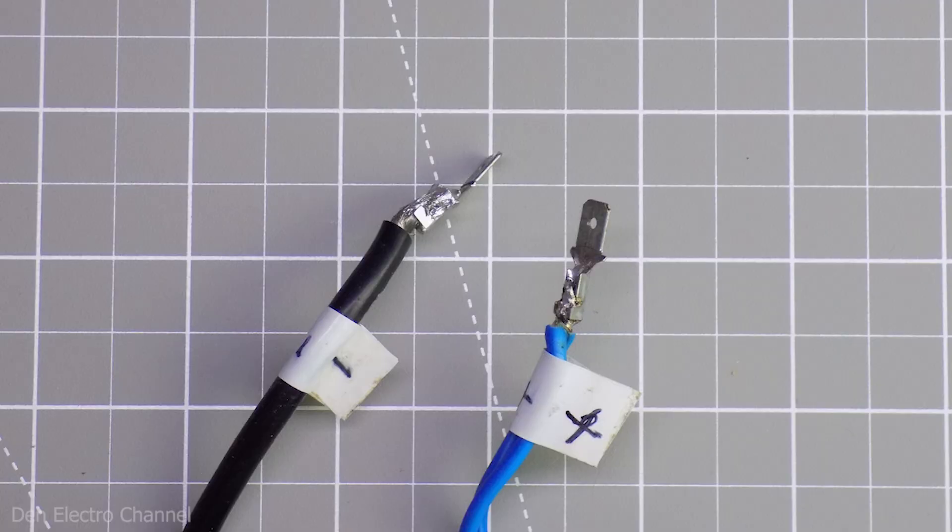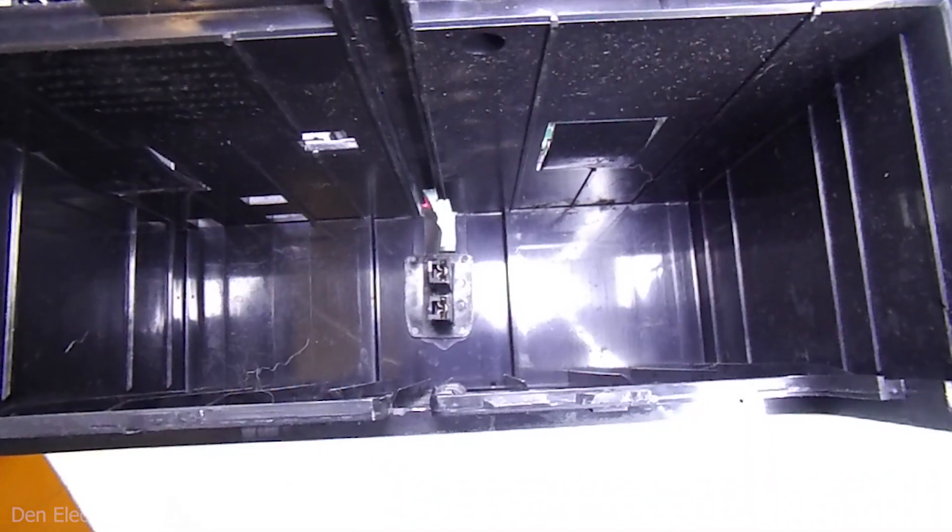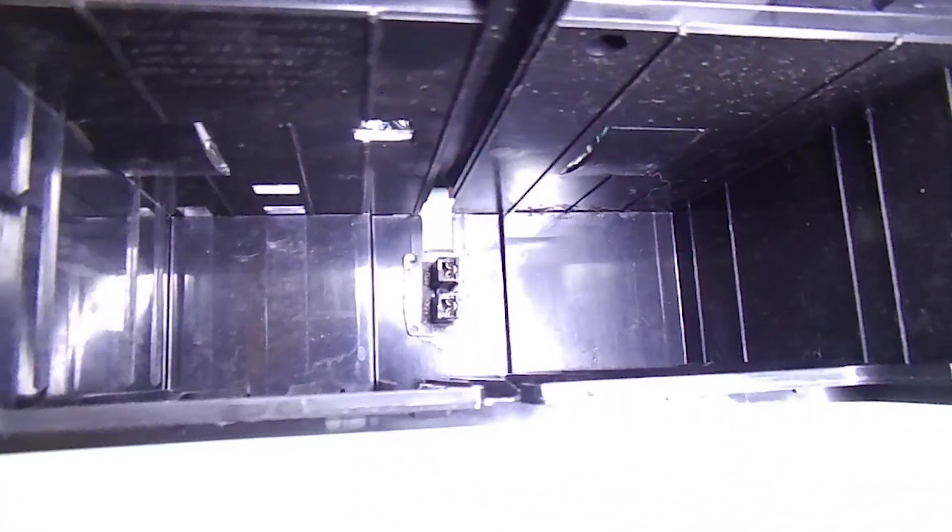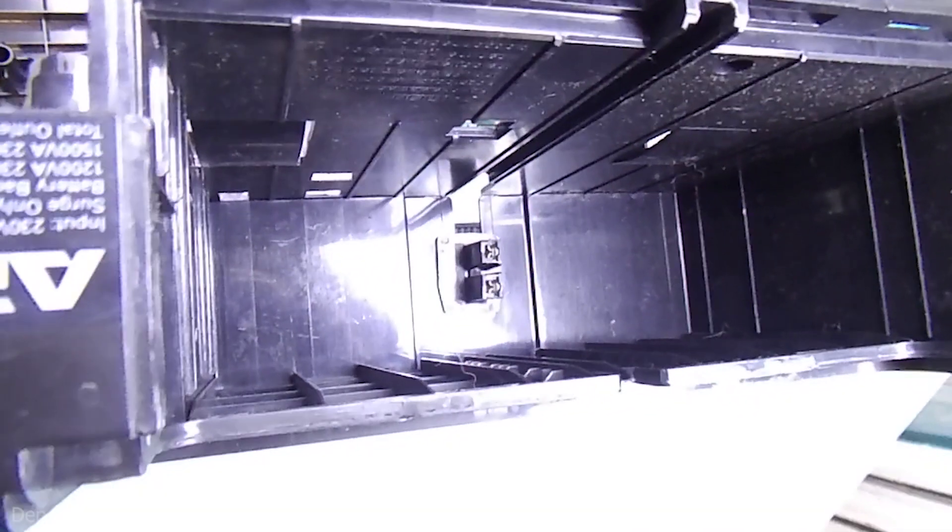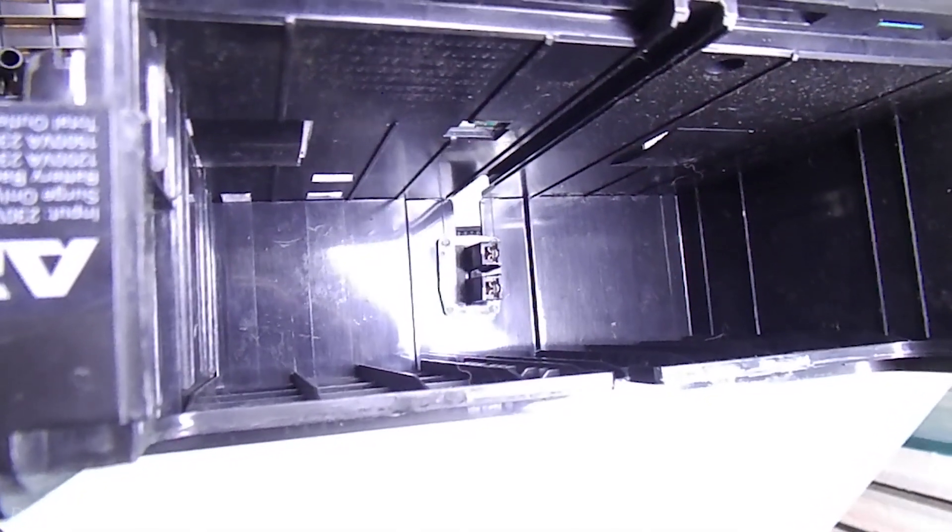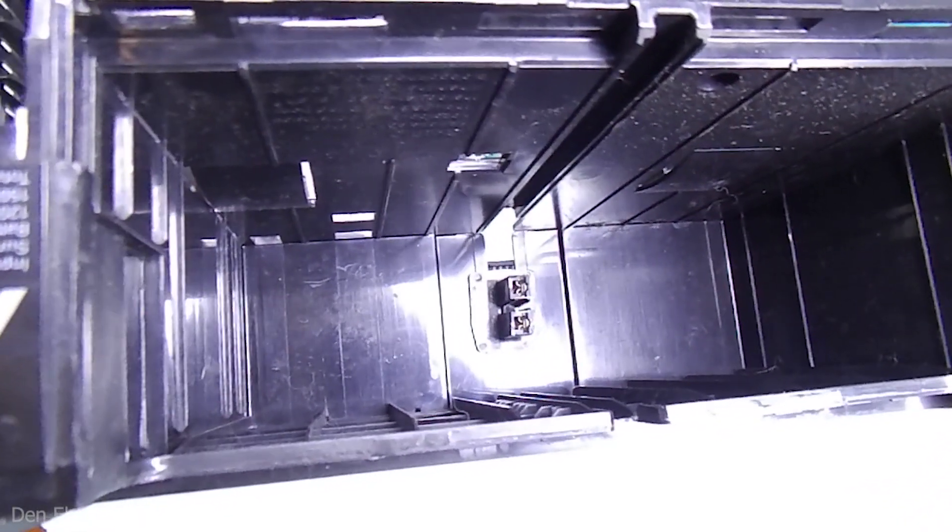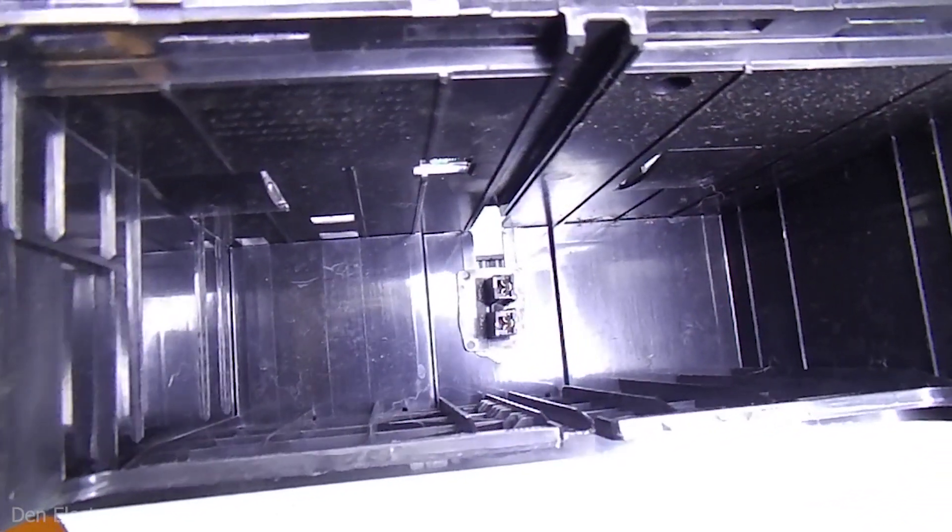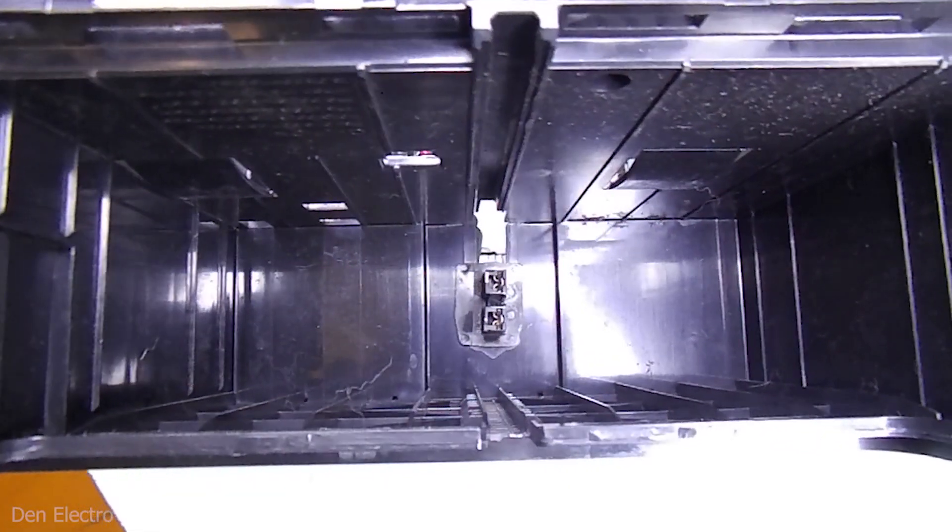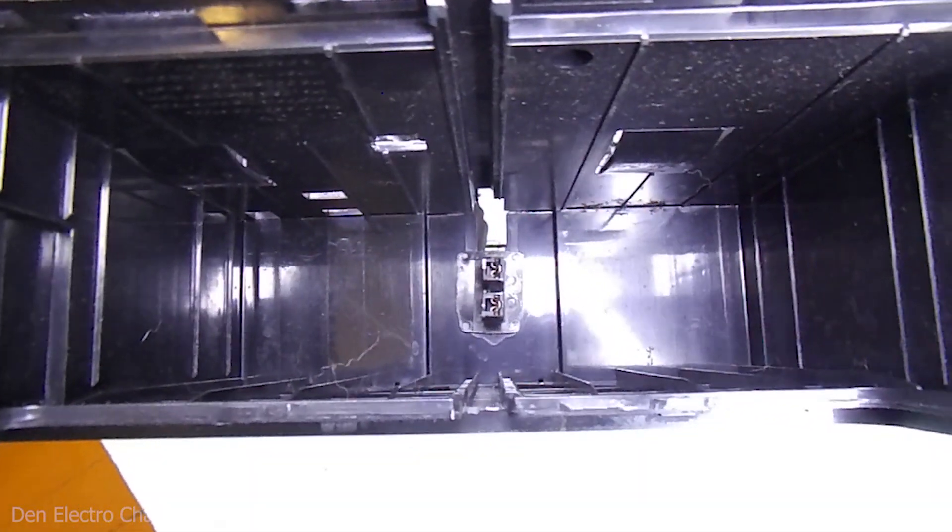To connect to the UPS, I soldered lugs onto the wires. Previously, two batteries were connected in series with a jumper in the battery compartment. One wire came from each battery, one is a plus and the other is a minus. Then they connected to this connector, but now this connector began to get in the way.